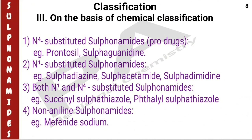On the basis of chemical classification, sulfonamides are classified into four types. The first type is N4-substituted sulfonamides — they are prodrugs, examples being Prontosil and sulfaguanidine. The second type is N1-substituted sulfonamides — examples are sulfadiazine, sulfacetamide, and sulfadimidine. The third type is both N1 and N4-substituted sulfonamides — examples are succinylsulfathiazole and thalylsulfathiazole. The last type is non-aniline sulfonamides — example: mafenide.